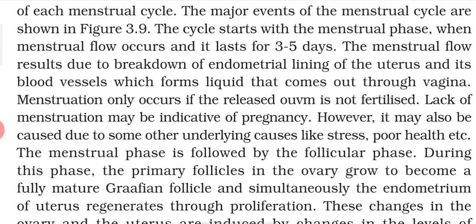The menstrual flow results from the breakdown of the endometrium lining of the uterus and its blood vessels, which forms a liquid that comes out through the vagina. The uterus contains an inner lining known as the endometrium. Whenever this endometrium starts breaking and the blood vessels burst, a flow is produced that comes out from the vagina — we call it menstrual flow.